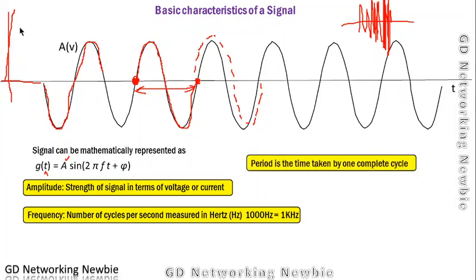Then we have the period. Period is the time taken by one complete cycle. From this point to this point, how much time has been taken by this wave or signal - that is known as period.